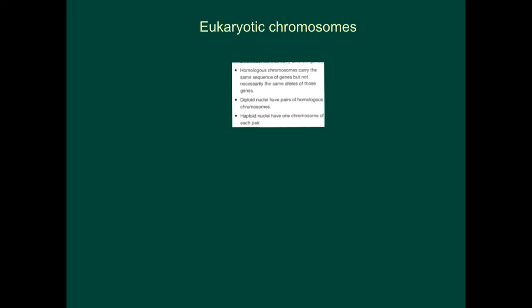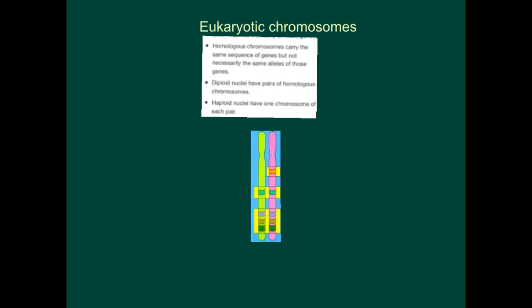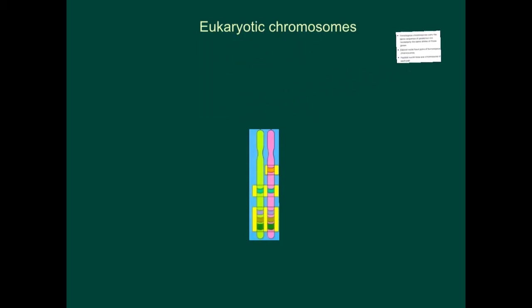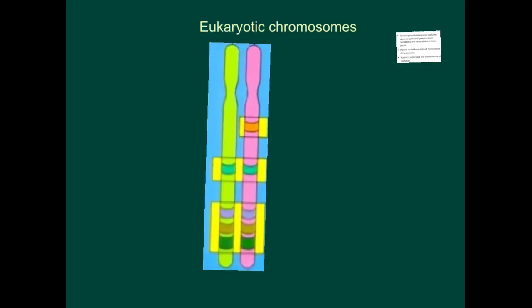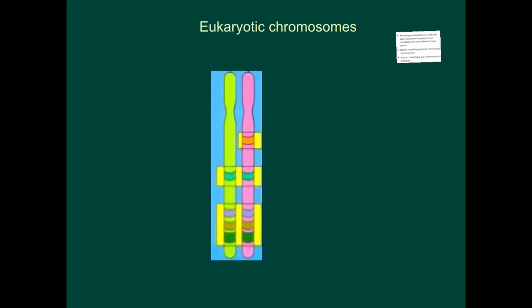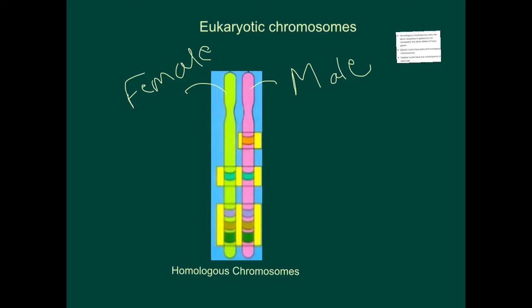Let's have a look at the picture we've already seen in one of the earlier slides. Let's reduce this and look at the homologous chromosomes. As we had seen earlier, these two are homologous chromosomes — one inherited from the male parent and the other from the female parent.